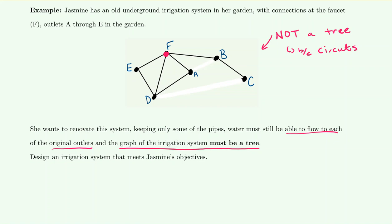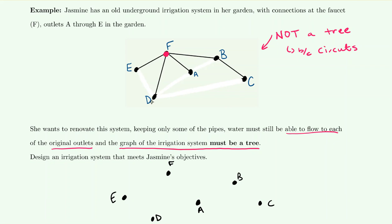Continuing, we could get rid of the edge between A and D, so A is directly connected to F, and F is still connected to D. We could also remove the connection between E and D so faucet F goes directly to E and directly to D. There are many possible trees we could create from this one graph. After remodeling, we keep only the necessary connections so water still reaches all faucets and the resulting diagram is a tree.